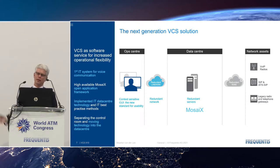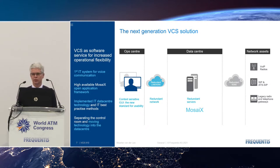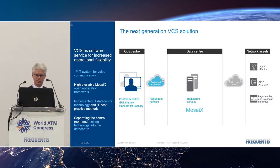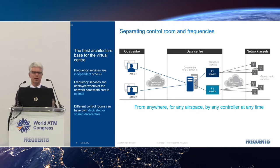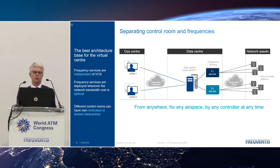MOSAICS is the Frequentis technology which makes IT ATM-grade, creating a redundant platform and enabling integration with other applications. Within the data center we use normal servers, normal Linux, and the latest generation of virtualization based on Docker technology to run our applications in small micro-services.